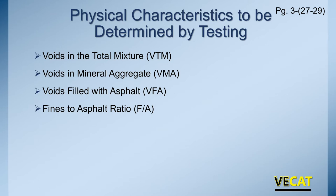Now let's look at the mix itself. We've talked about the binder and the aggregate, so let's talk about the mix as we put everything together. We've got voids in the total mixture, voids in mineral aggregate, voids filled with asphalt, and the fines-to-asphalt ratio. These are all characteristics of that material that we find through lab testing.